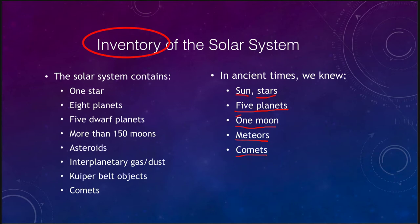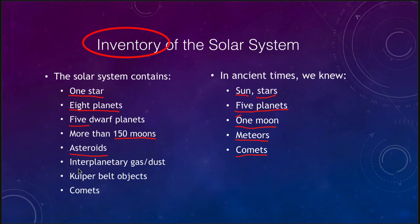Now we have a much better understanding. We know that our solar system contains one and only one star, and that the rest of the stars could be parts of other solar systems. We are now up to eight planets, five dwarf planets, and more than 150 moons known throughout the solar system. Asteroids have been discovered, as well as interplanetary gas and dust. We now also know of Kuiper belt objects, and we have a much better understanding of comets.